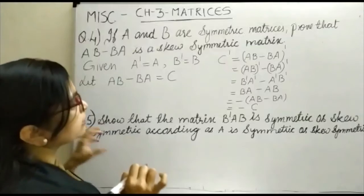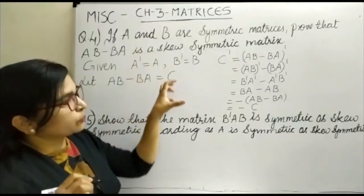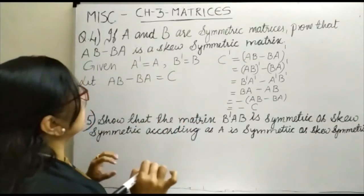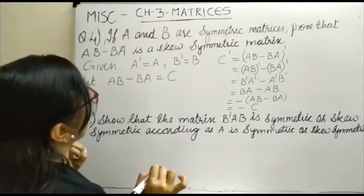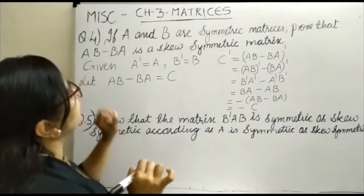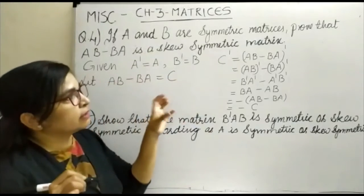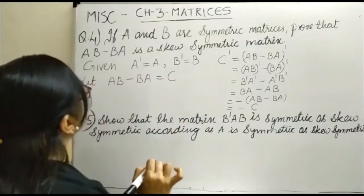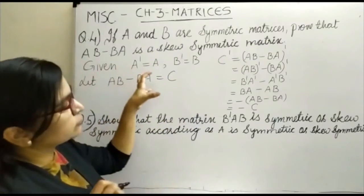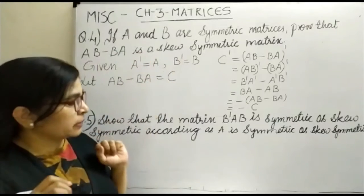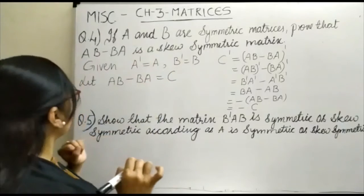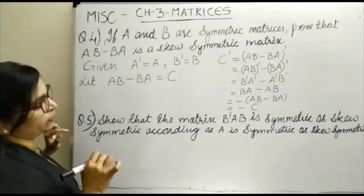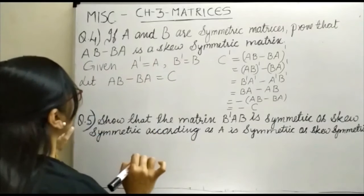We have shown that C transpose equals minus C, and this is how we have proved that when A and B are symmetric matrices, AB minus BA is a skew symmetric matrix. Let us see question number 5.